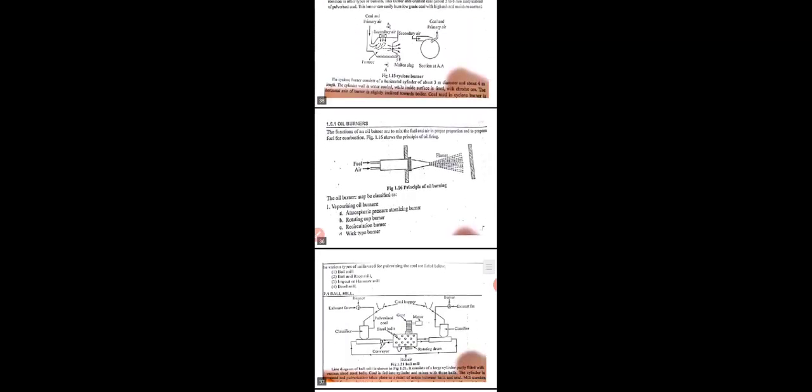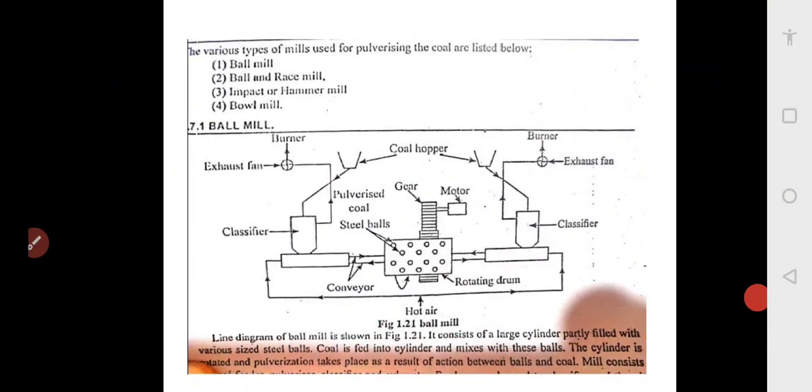Hello students, now we will continue our discussion on steam power plant. In this discussion, we shall see the pulverizing mills. As told earlier, pulverizing mills are the mills which convert lump coal or rock coal into powder form.